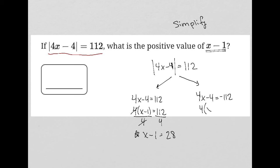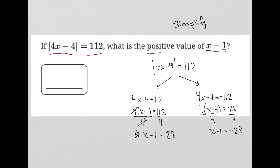If I were to factor out 4 on the other equation, I'd still divide both sides by 4, but I'd get a negative value — x minus 1 is equal to negative 28. And that's not what I want. I want the positive value of x minus 1. So my correct answer here is 28, and that's what I'm going to select.